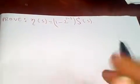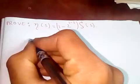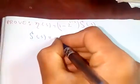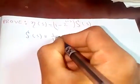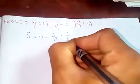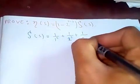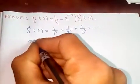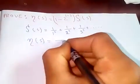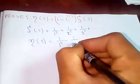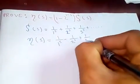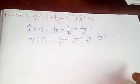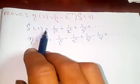Currently we know the zeta function of s is equal to 1/1^s + 1/2^s + 1/3^s + ... and so on. The Dirichlet eta function is the alternating version: 1/1^s - 1/2^s + 1/3^s - 1/4^s + ... and so on. The first is the Riemann zeta function and the second is the Dirichlet eta function.